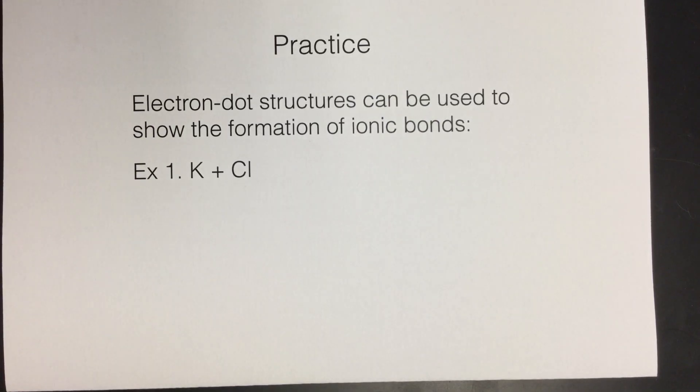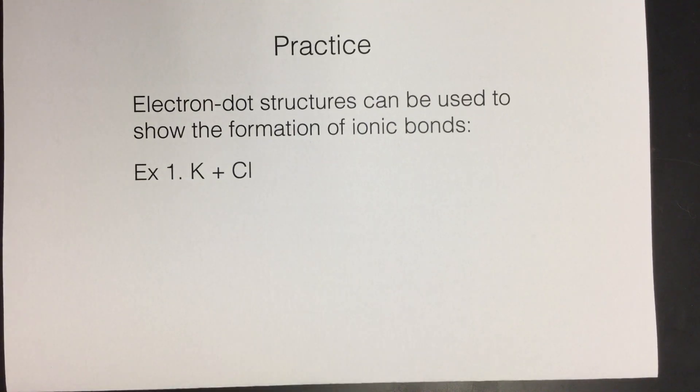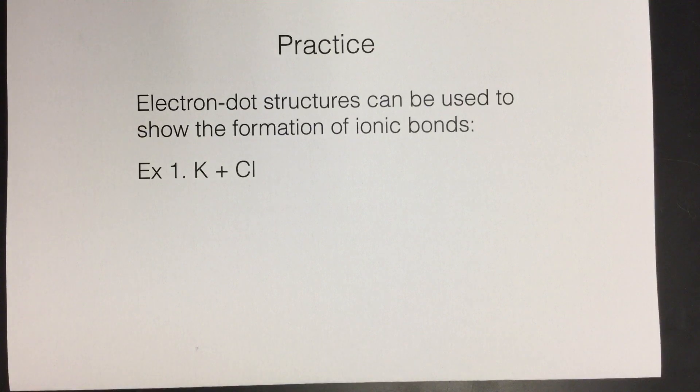All right, chemistry students, today we are going to be doing problems to show the formation of an ionic bond using electron dot structures. I like to call these problems love story problems, so I'm going to do a few examples from the notes that we did together in class, starting with this one showing the formation of the ionic bond that forms between potassium and chlorine. To start out these problems, we are going to draw the dot structures for both of the things involved in the ionic bond.